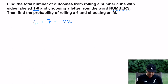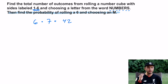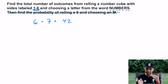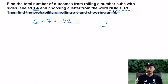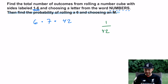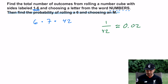We're not done — it says find the probability of rolling a six and choosing an M. There's only one six on the number cube and one letter M in the word NUMBERS, so there's only one combination out of 42 possible outcomes. Dividing that gives approximately 0.024, so that's your probability of rolling a six and choosing an M — roughly two percent.